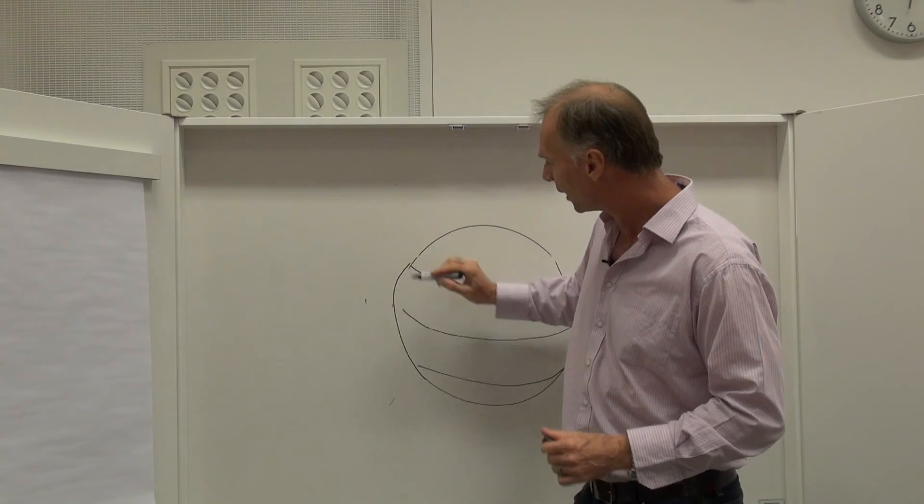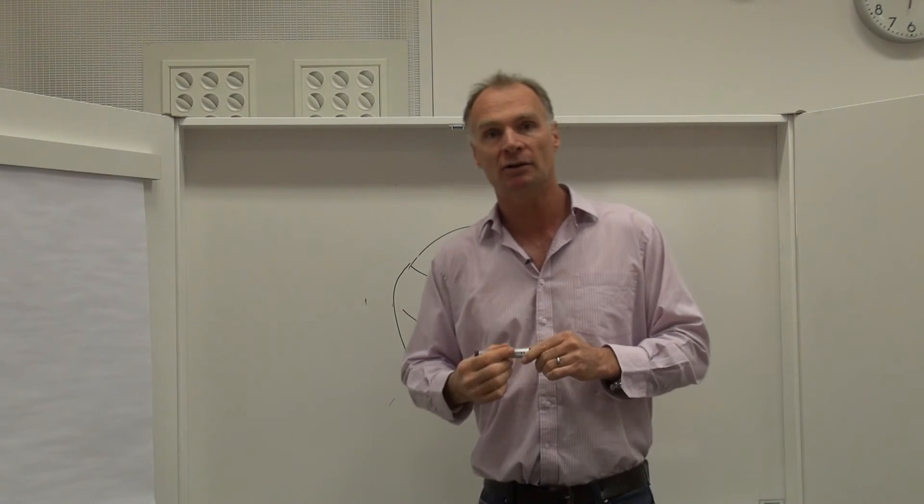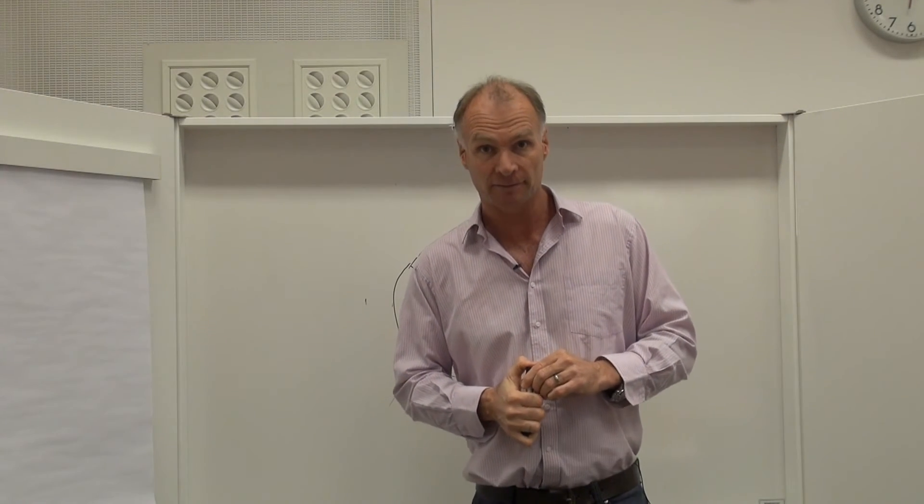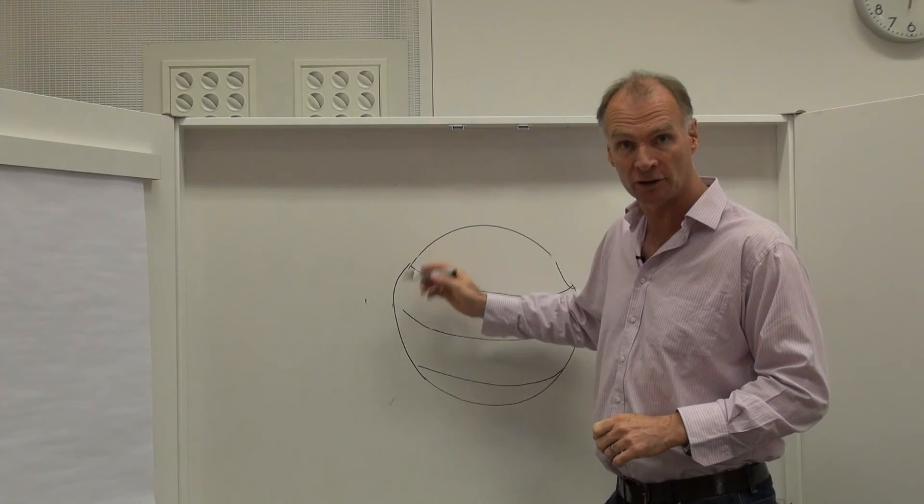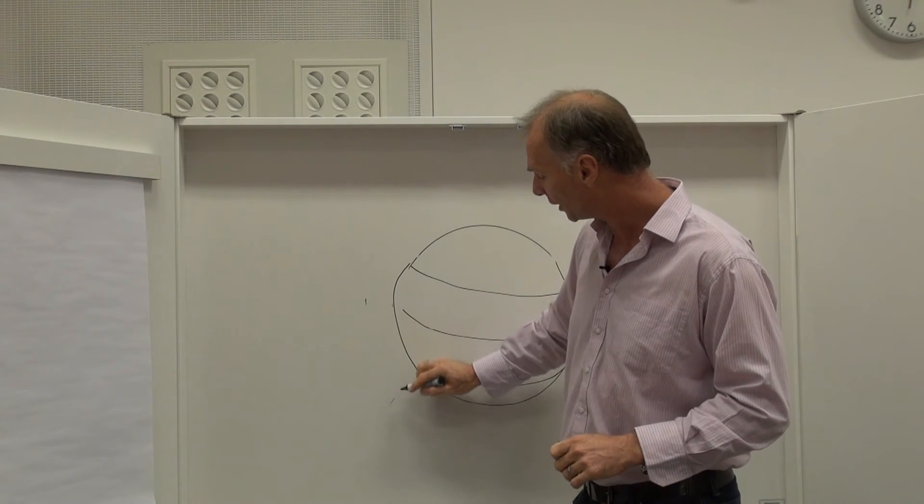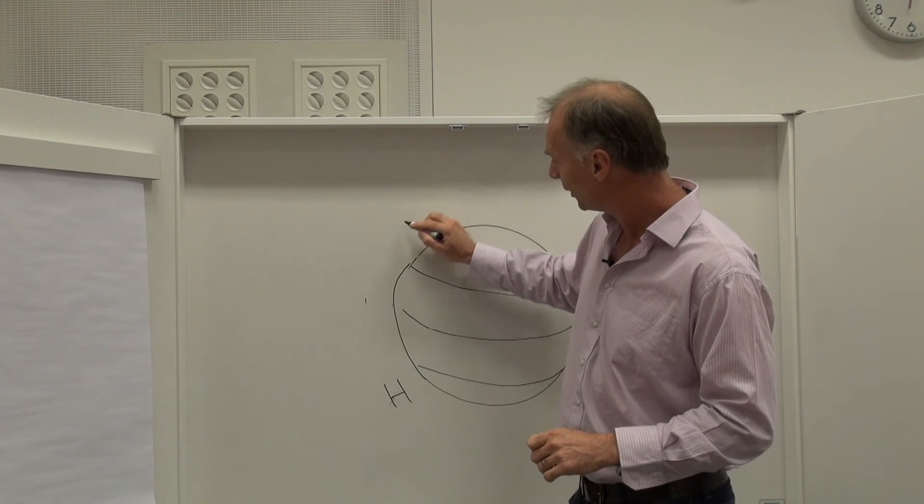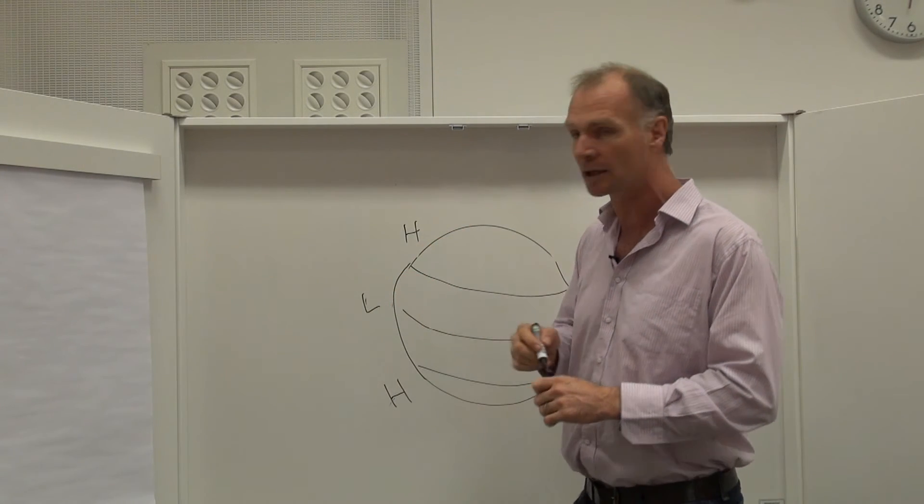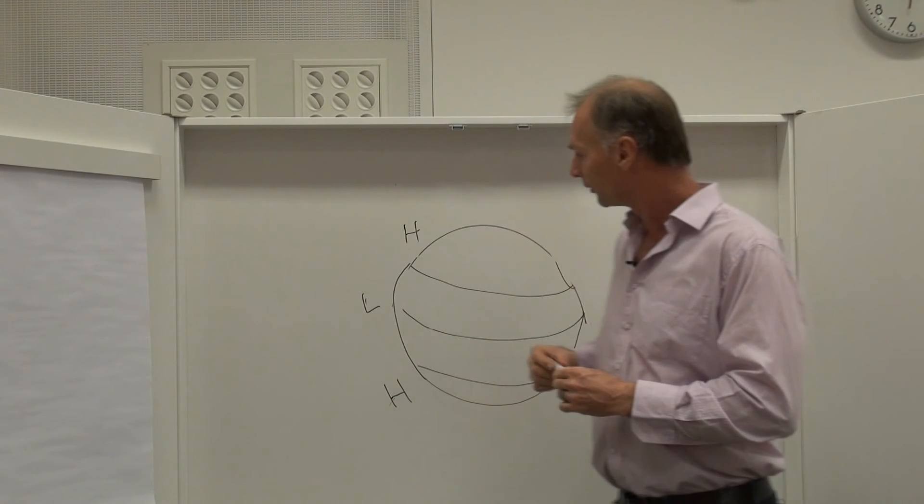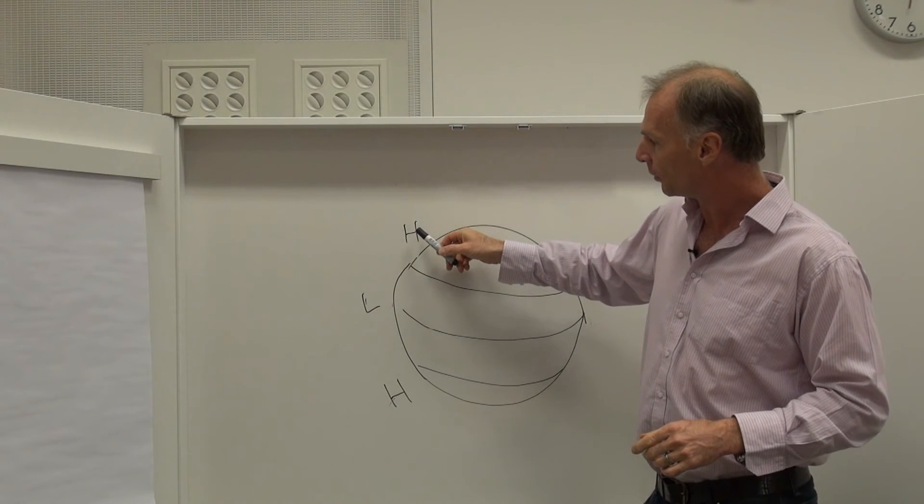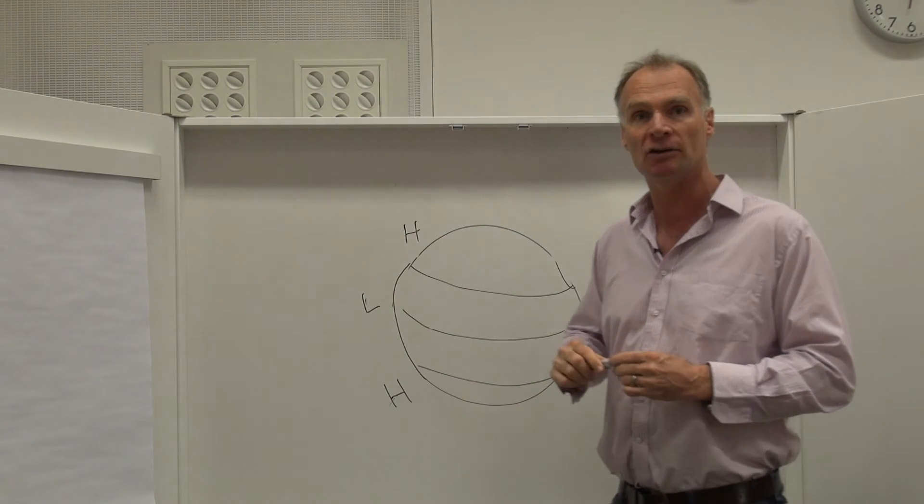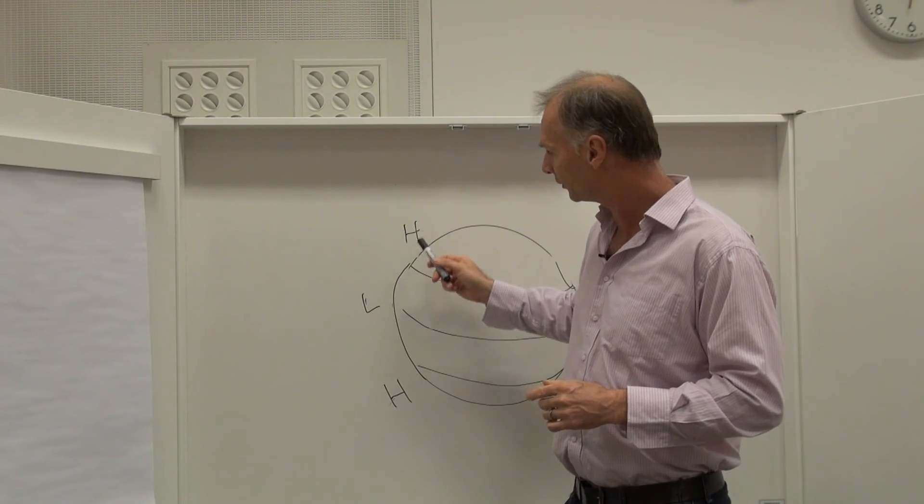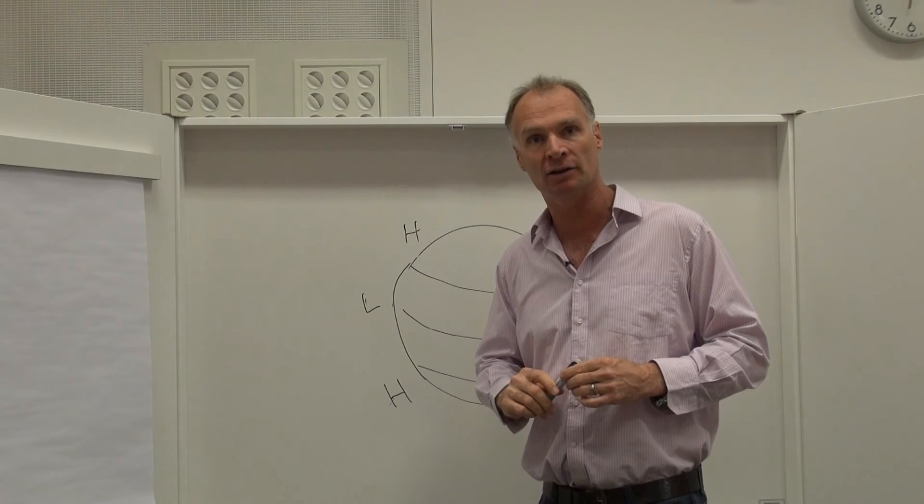They found that when they looked at species evenness, that it was not as you'd expect. It didn't follow species richness. Species evenness is actually higher in the colder waters and lower in the tropics. So this means that there is more of a relatively even spread of fish up in these colder areas than there is, say, on the coral reefs.